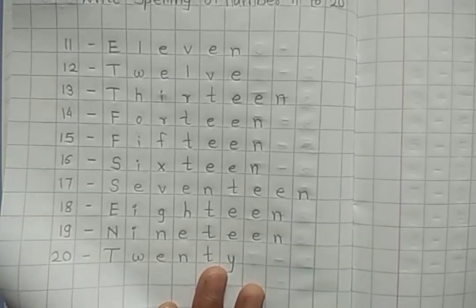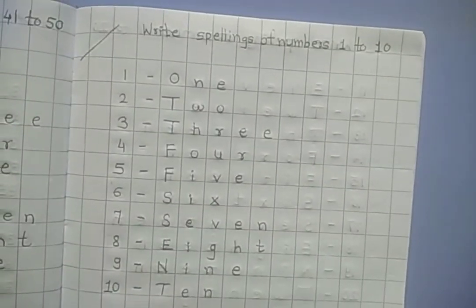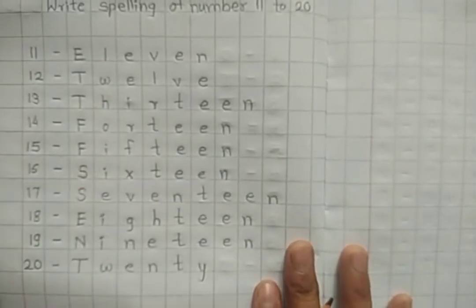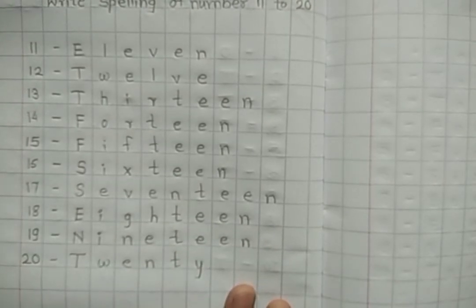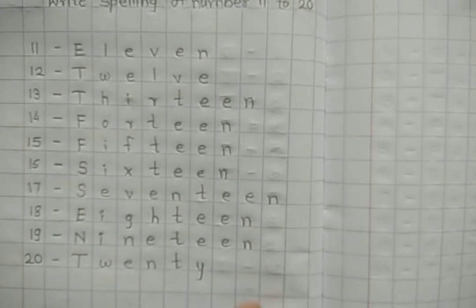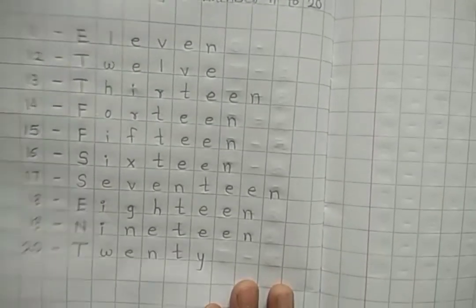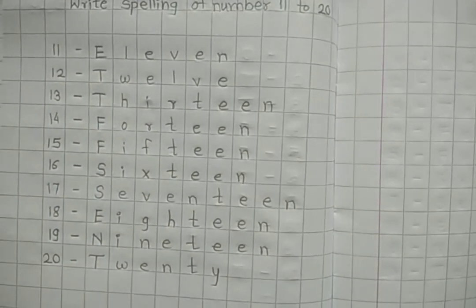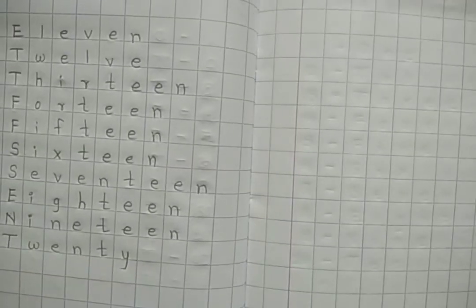So students, you have to write like this, okay? The spellings of number 1 to 10 and spellings of number 11 to 20. And you have to write it 2 times, okay? You have to write both pages two times. And then click the photo, send to the group. Bye-bye, take care, thank you.